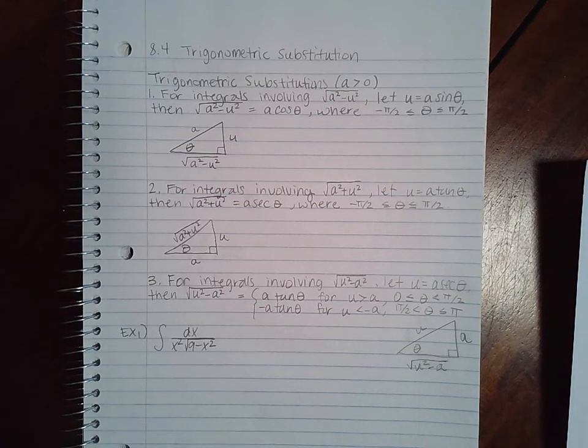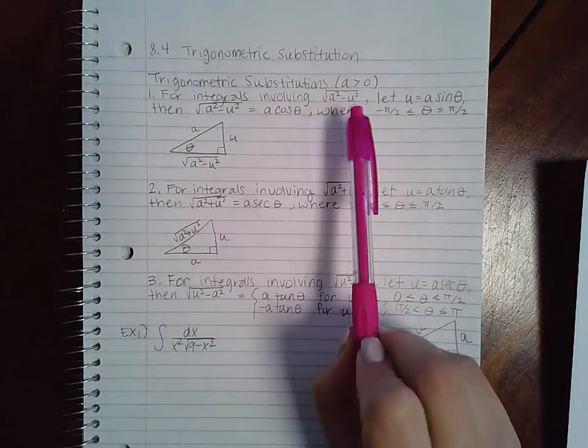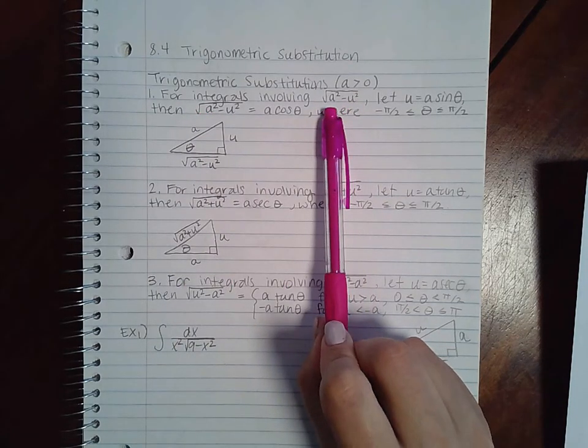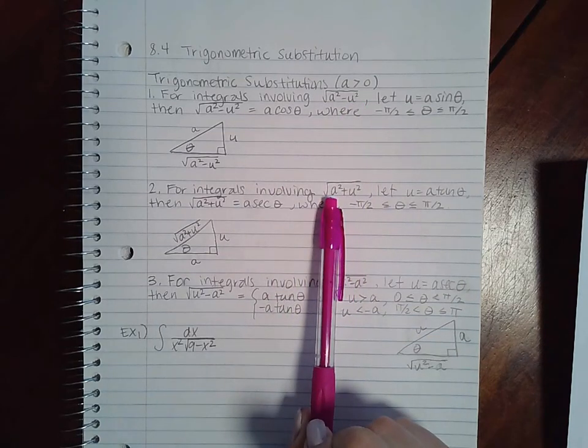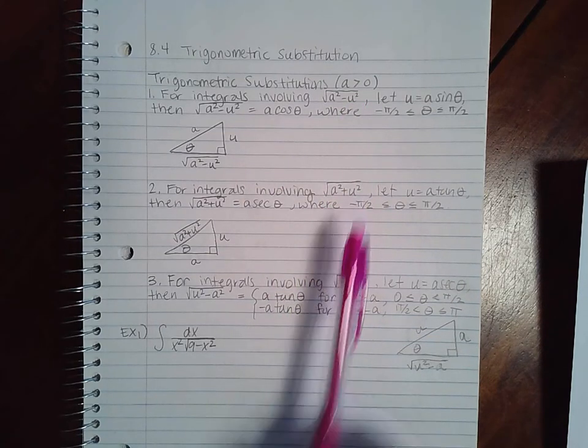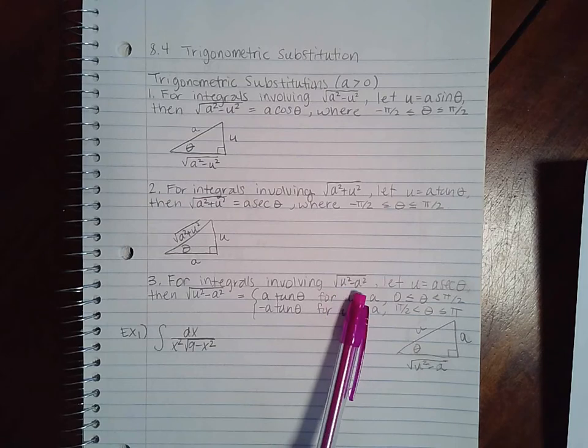This is section 8.4, trigonometric substitution. Here we have three different setups for substitution depending on if your integral involves a constant minus a variable squared, constant squared plus a variable squared, or variable squared minus a constant squared.